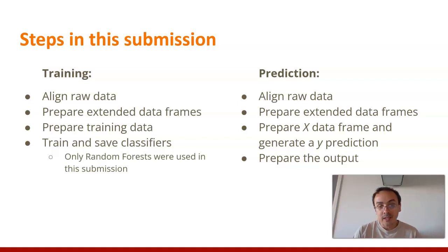There's not much to discuss in the steps, because they're pretty much the same for everybody. And as I said, they are quite similar to the ones in the List et al. 2022 submission, which performs better than mine. So in the training, we align the raw data, we prepare the extended data frames with this additional multi-tiers. We prepare the training data and we train and save the classifiers. And here, given that I was aiming for a baseline for my method, I was only using random forests. I could have tried with other methods, but there were limitations also in the computation. So it was just RFs. And the prediction, as you would expect, we get what we want to predict, we align the raw data, we prepare the extended data frames, we prepare a X data frame and generate a Y prediction, and we build the output from there.